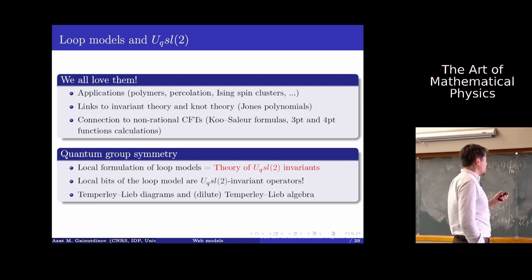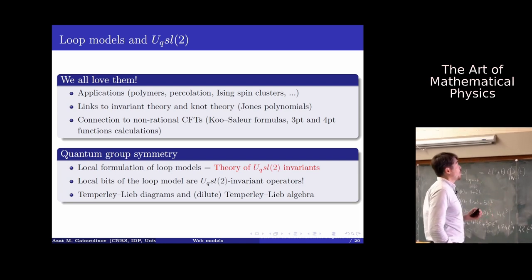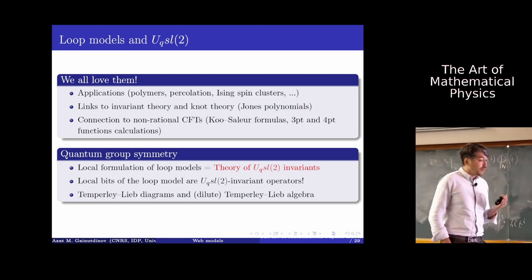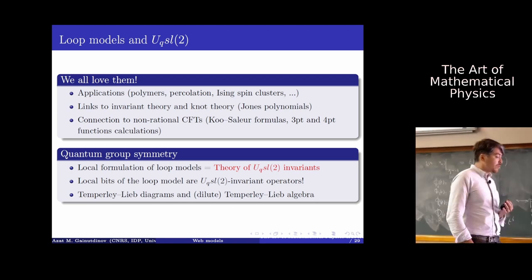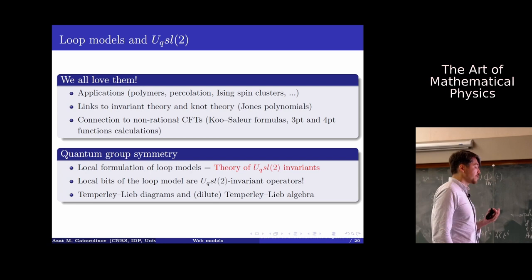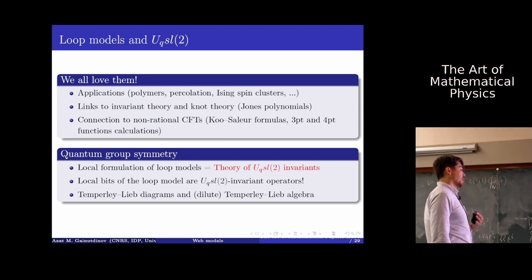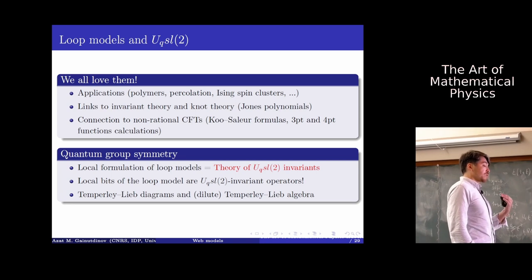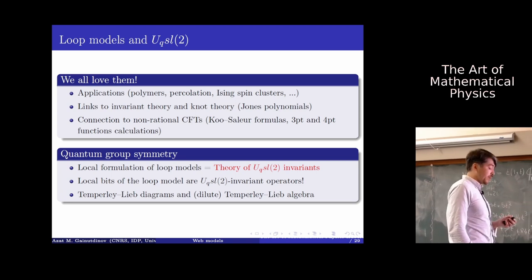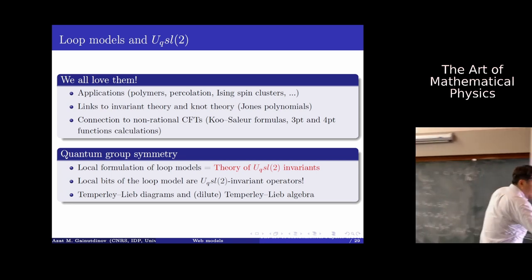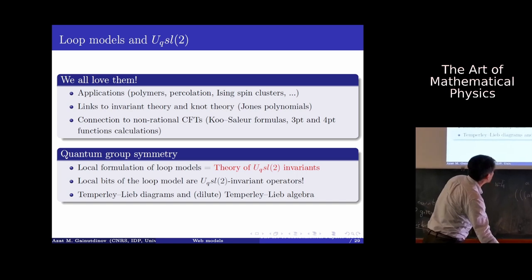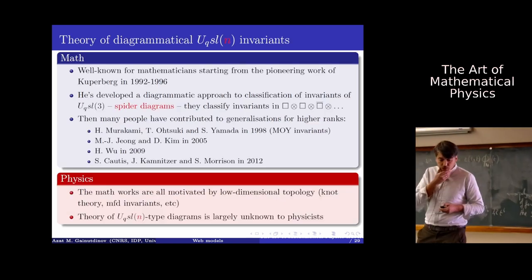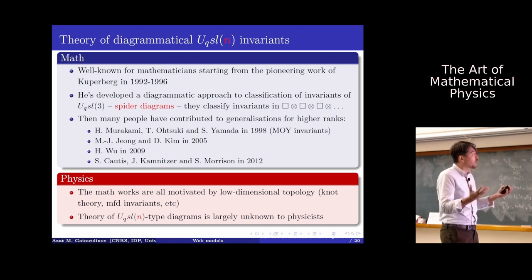From this point of view, why not try to think about statistical models where local pieces would be U_q(SL_N) or some other quantum group invariant operators? It is quite natural to think about invariant theory for higher-rank quantum groups.